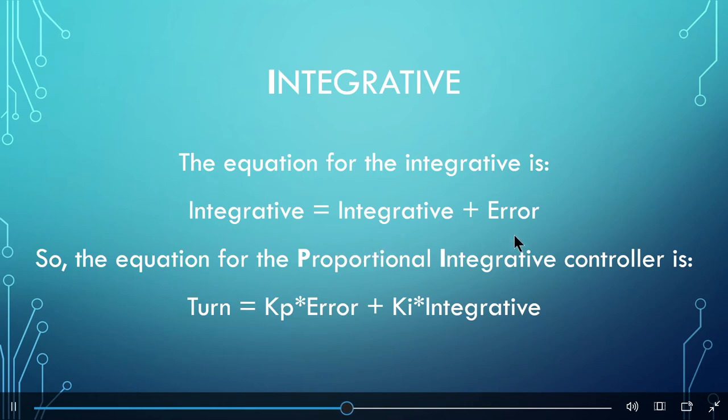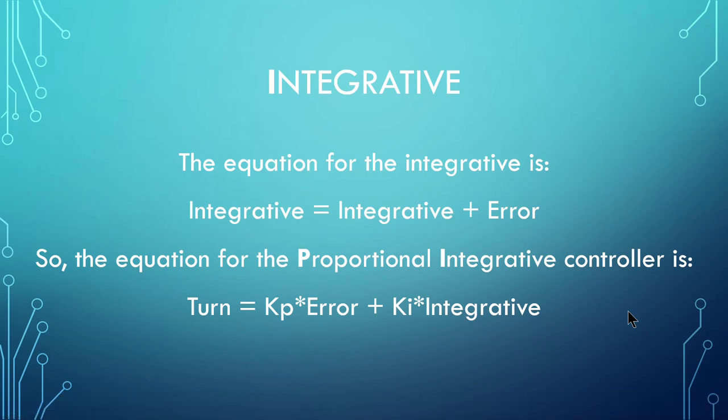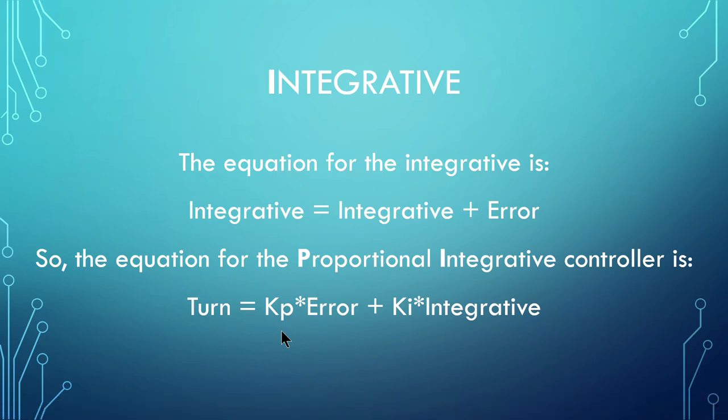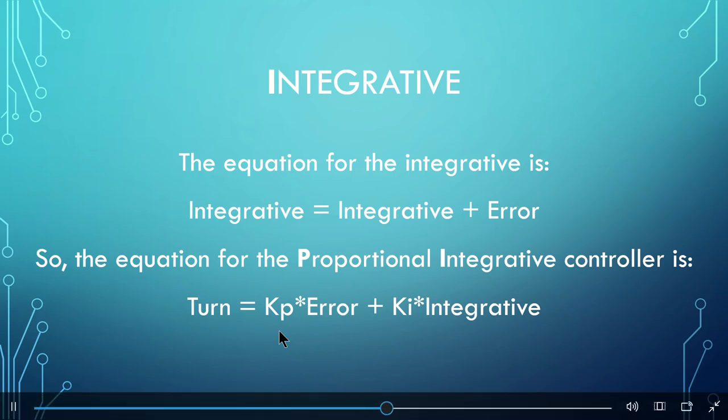When the error keeps the same sign, like a negative 3 error, and next a negative 5 error, the integral grows bigger, making the robot want to overshoot the turn to get back to the middle. The integral is important since it helps the controller fix small errors that the proportional may not be able to take care of. The proportional algorithm could fix it, but it results in a line follower that wobbles back and forth.